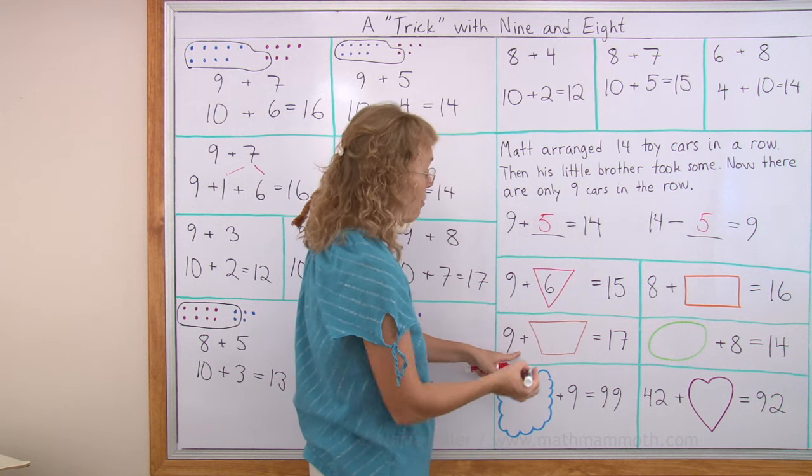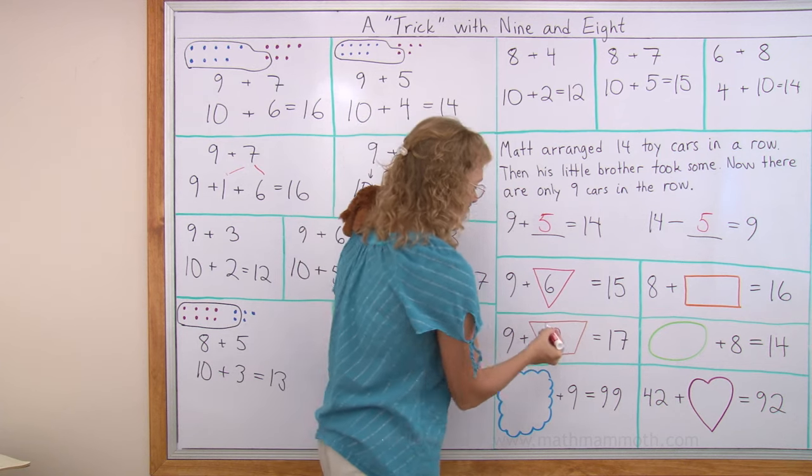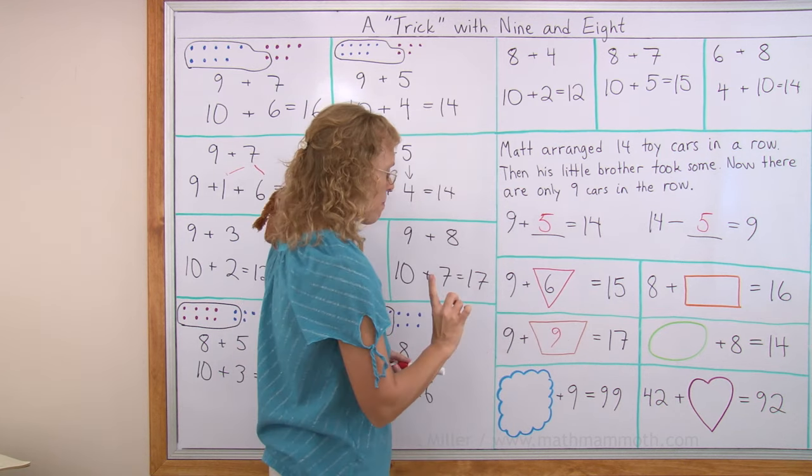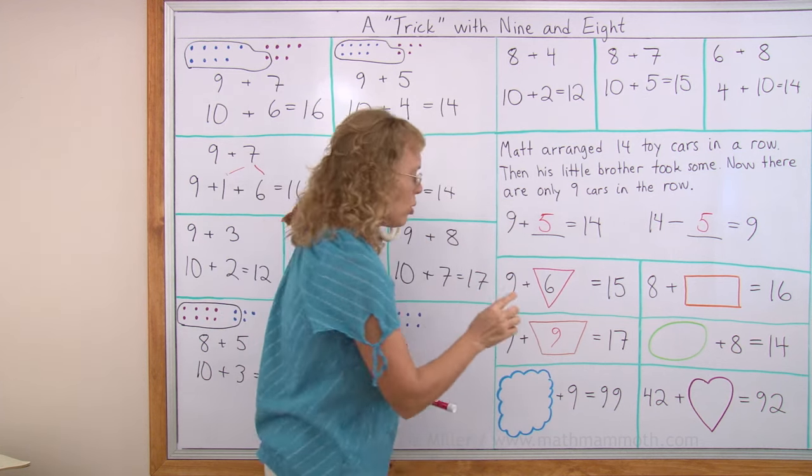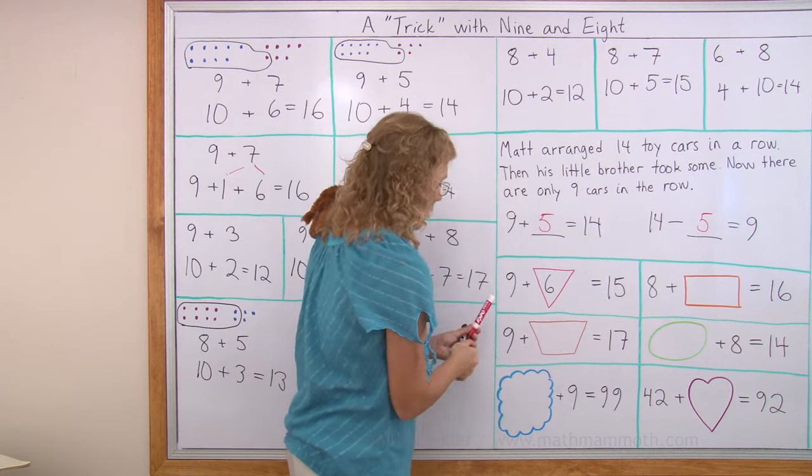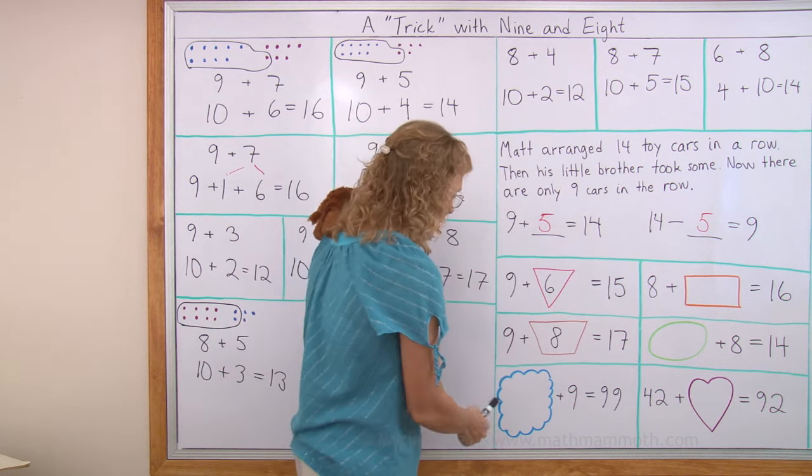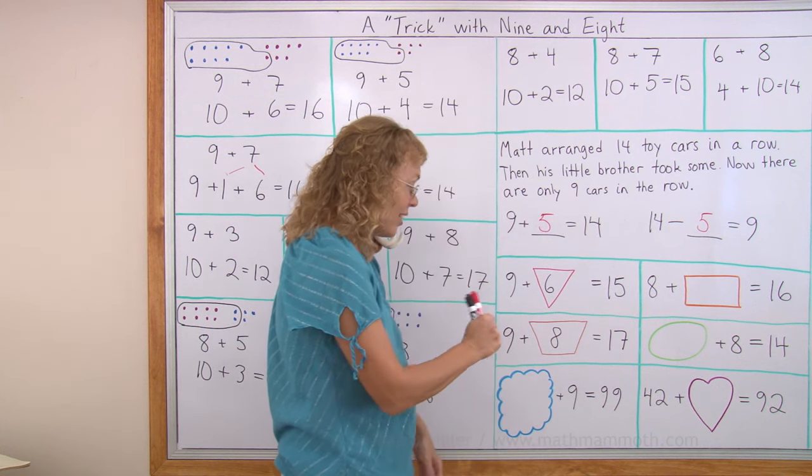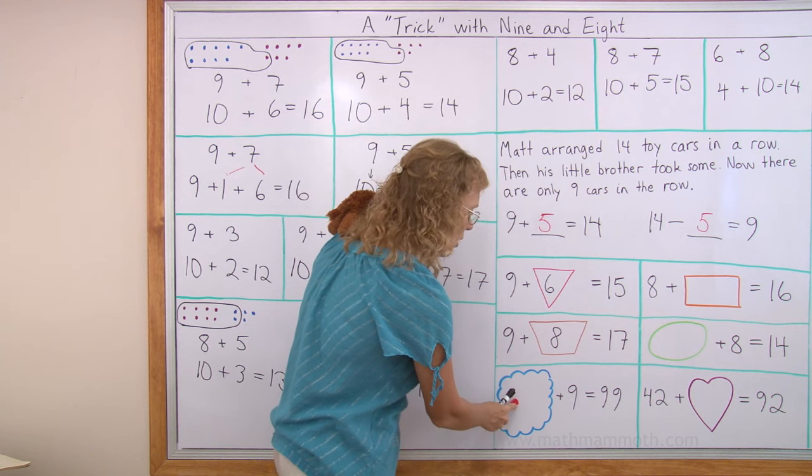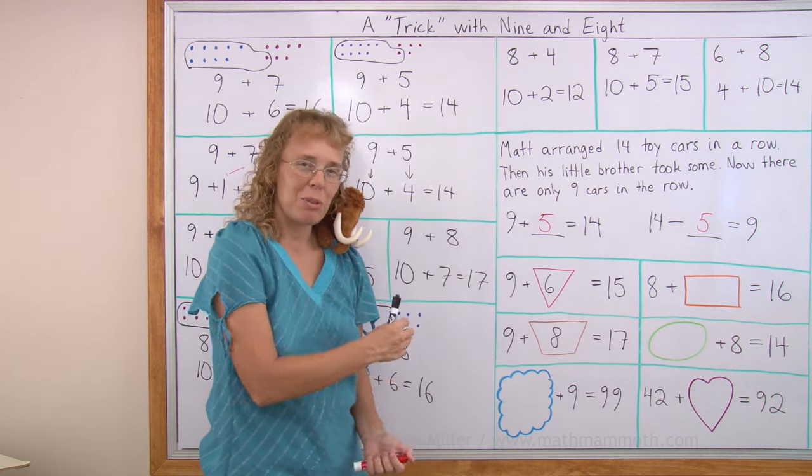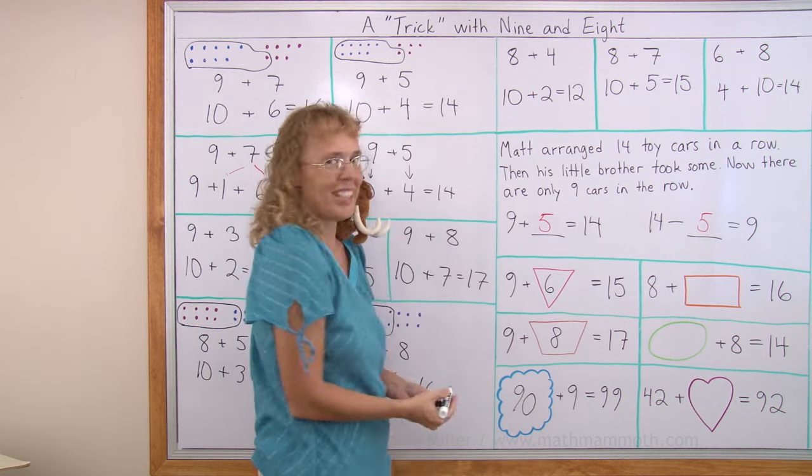Over here. 9 plus how many makes 17? You can just guess and check. How about if I guess 9? 9 plus 9 would be 10 and 8. 18. That's one too many. So let me try 8. 9 and 8 works. Oh, what about this cloud? So many plus 9 equals 99. Mathie's favorite number. What goes here? We've studied this before. This is not about this lesson. The answer is 90. 90 and 9 makes 99.